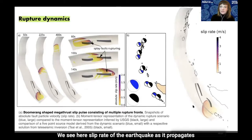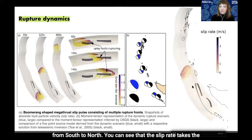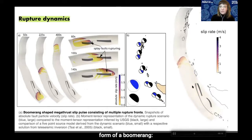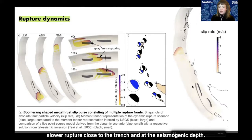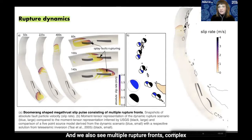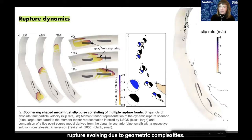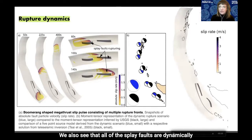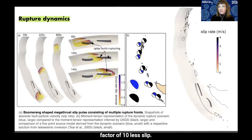In the preferred model we see the slip rate of the earthquake as it propagates from south to north. The slip rate takes the form of a boomerang shape, with slower rupture close to the trench and at seismogenic depth. We also see multiple complex rupture forms evolving due to geometric complexities, and all splay faults are dynamically activated independent of orientation, though they host a factor of 10 less slip.